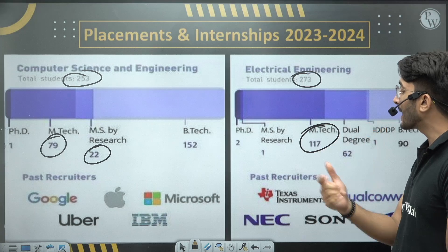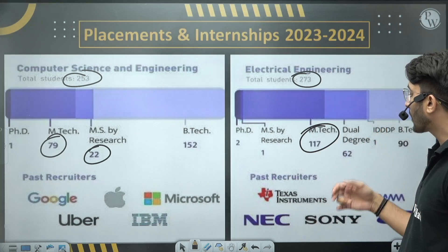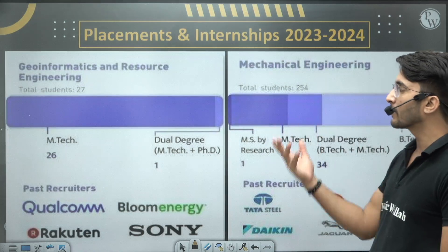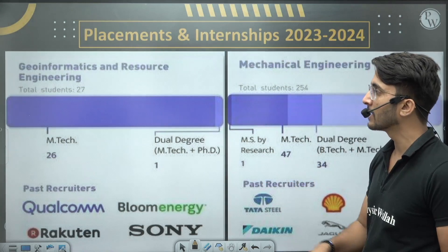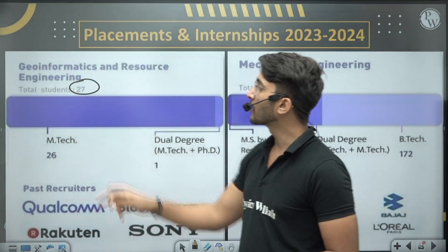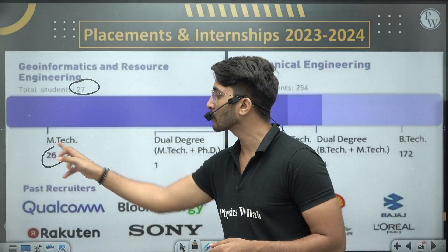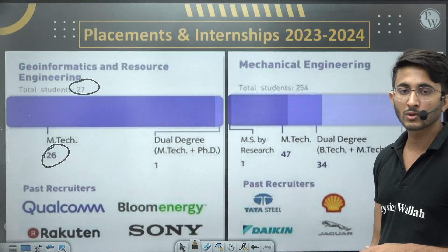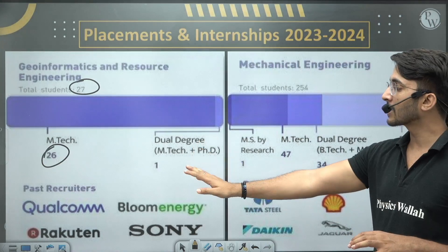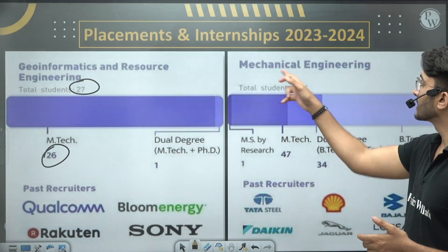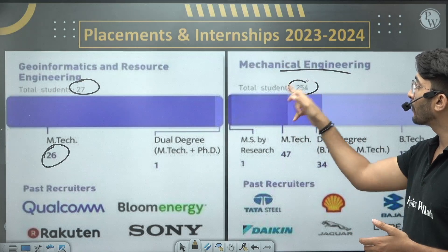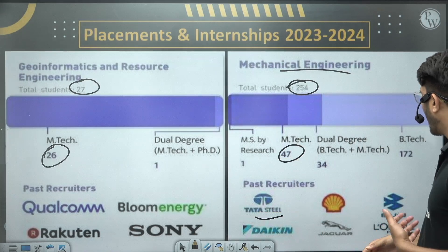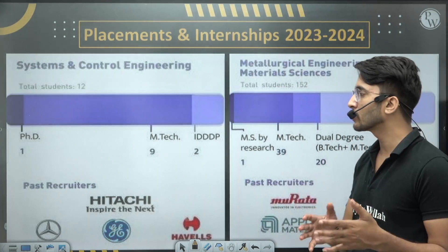For Electrical Engineering, 273 students were placed, of which 117 belong to the M.Tech category. Major recruiters include Texas Instruments, Qualcomm, Samsung, and Sony. For Geoinformatics, 27 students were placed with 26 from M.Tech. For Mechanical Engineering, 254 students were placed with 47 from M.Tech; recruiters include Tata Steel, Bajaj, and L'Oréal.